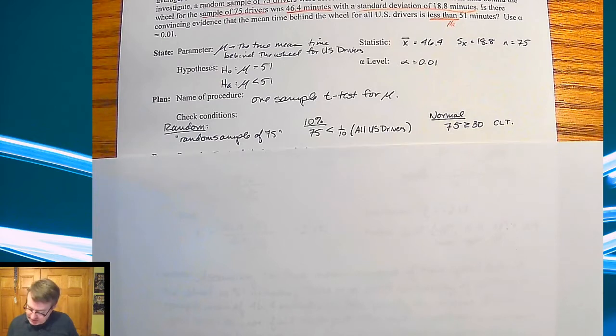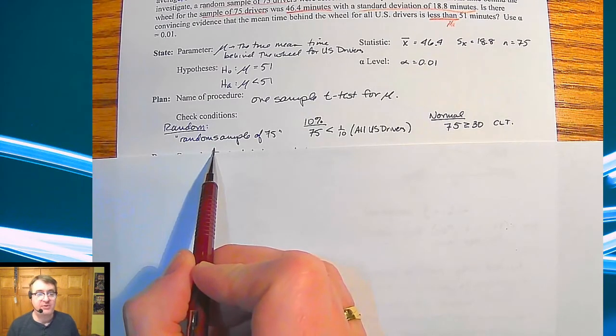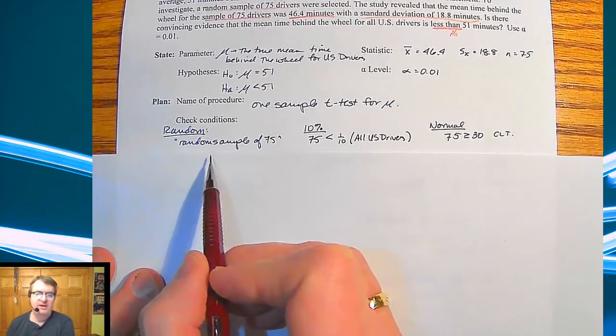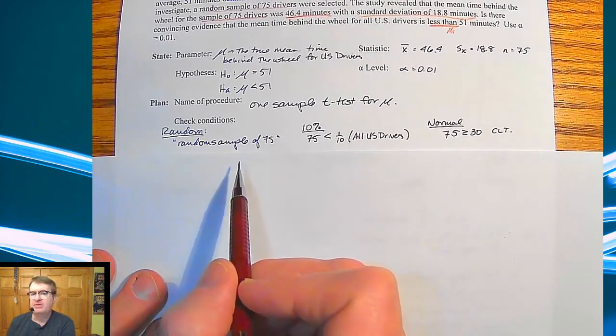For the conditions, like we talked above, random, it says random sample of 75. Somebody asked, should I say, should I actually quote it or should I say state it above? Quoting, it's probably your safer bet.